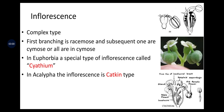The metabolic yield will be higher as compared to other families. Inflorescence is a complex type — the first branching is racemose and subsequent ones are cymose, or all are cymose. In Euphorbia, a special type of inflorescence is called cyathium. In Acalypha, the inflorescence is catkin type.